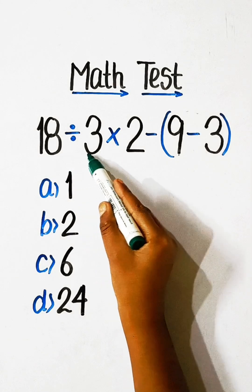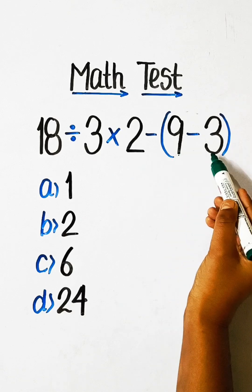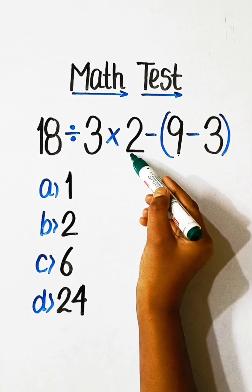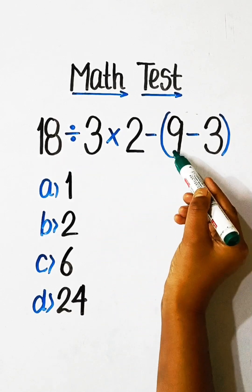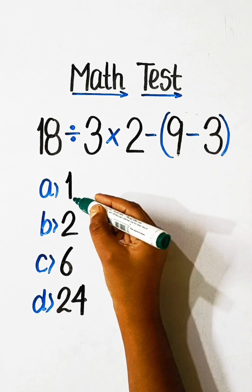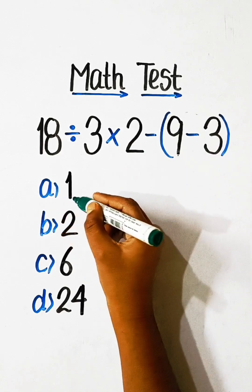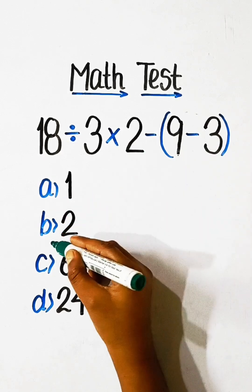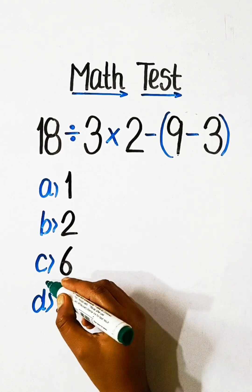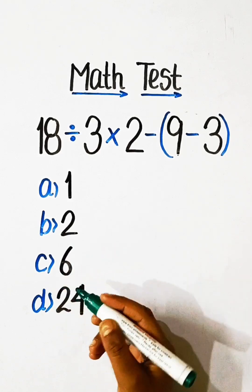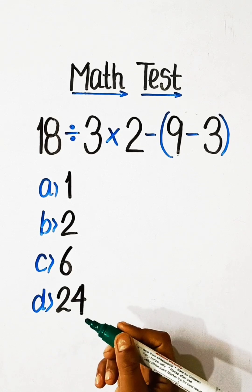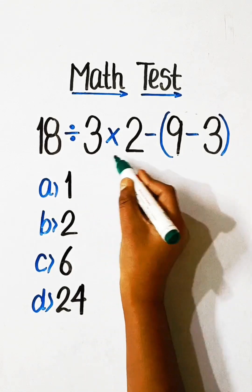In this video we will solve this math problem: 18 divided by 3 multiply by 2 minus 9 minus 3 equals to what. Option A: 1, Option B: 2, Option C: 6, Option D: 24. So it's time to solve.